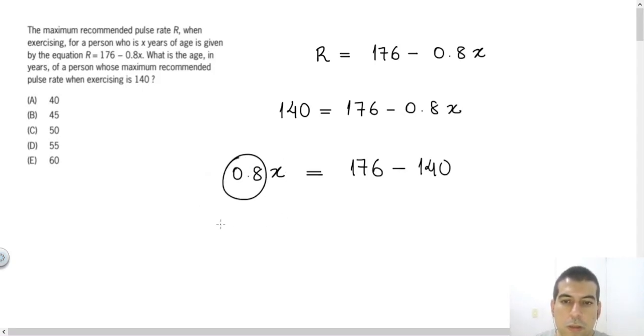So this 0.8, by the way, you can write as 8 divided by 10, 8 over 10 in the fraction form, times x. 176 minus 140 will be 36.